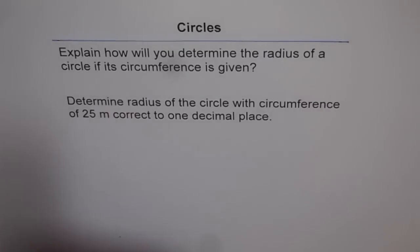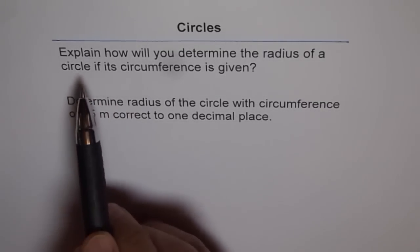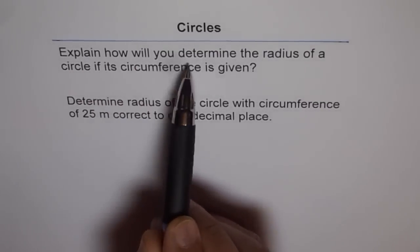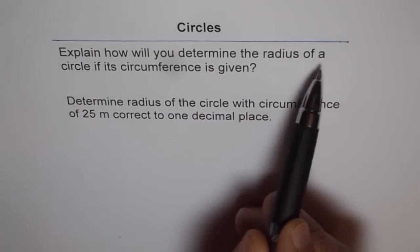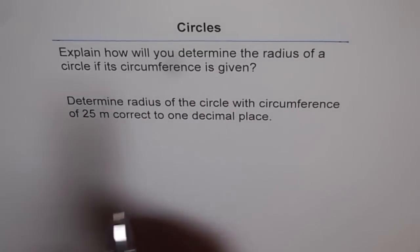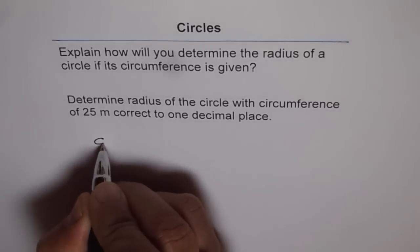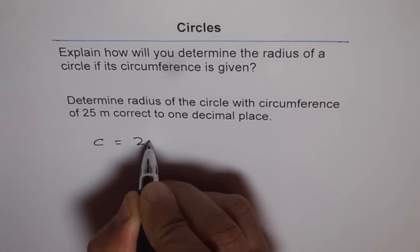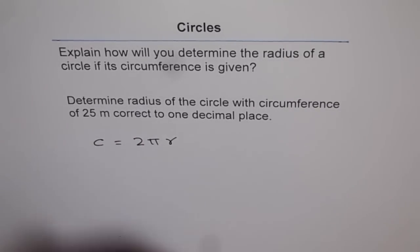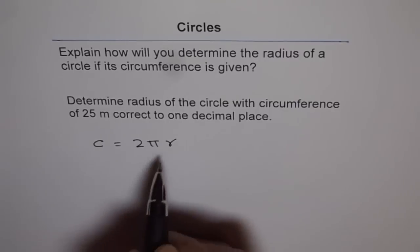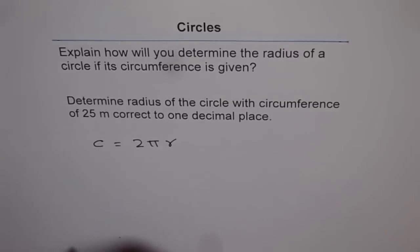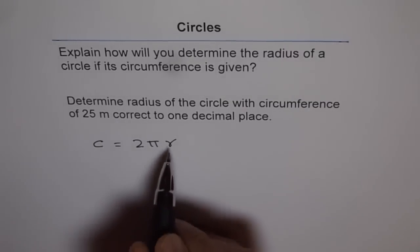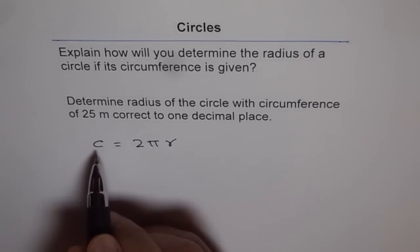Now, let's read the question once again. Explain how will you determine the radius of a circle if its circumference is given. You know, circumference is 2 times pi r. Now, if the radius is given, we can find circumference. But how do we find radius if we have a known circumference?